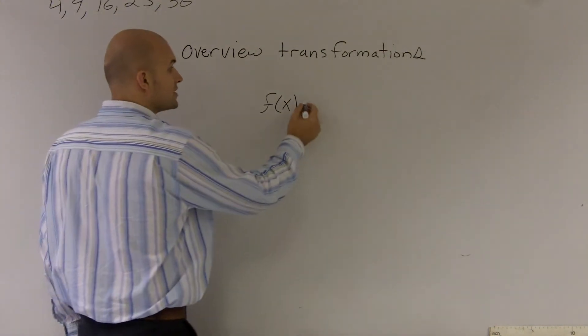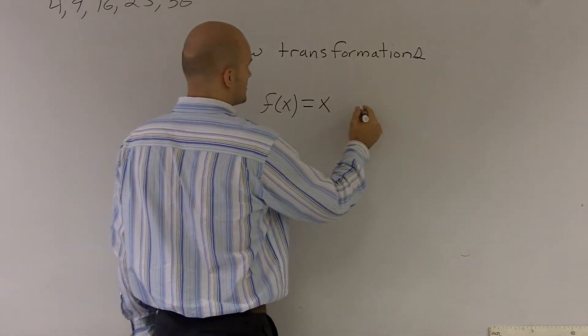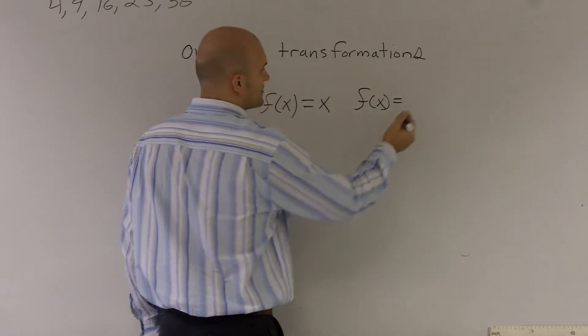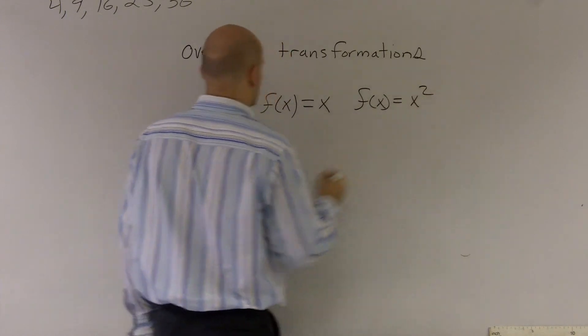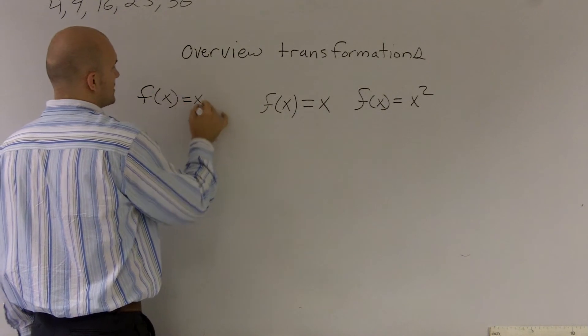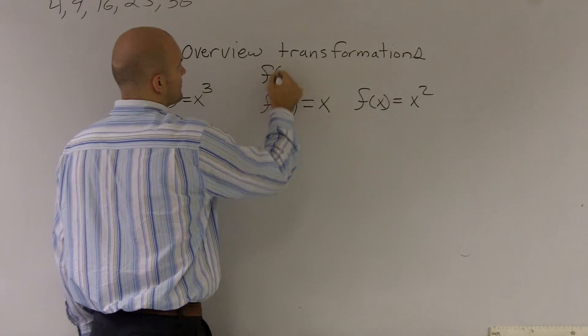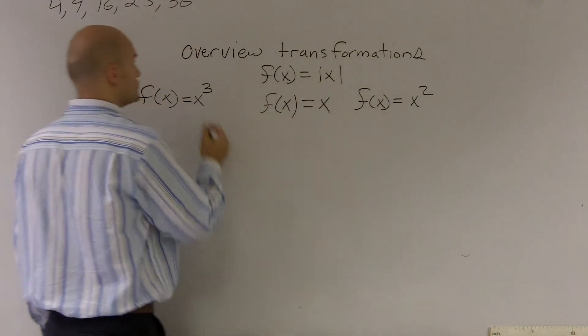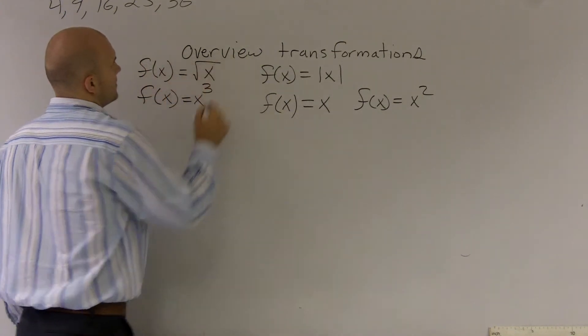We can have a linear function f(x) = x. We've also talked about quadratic, well, we'll just do a square function x². We have f(x) = x³ cubic, and we can also do an absolute value as well. You can also do a root, so there's multiple different functions.